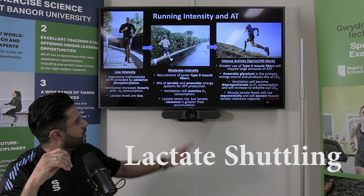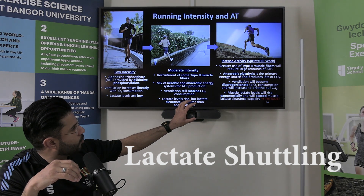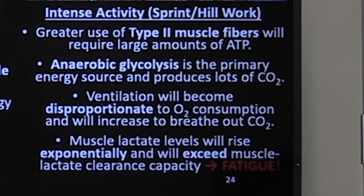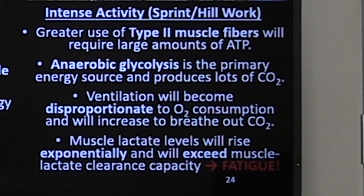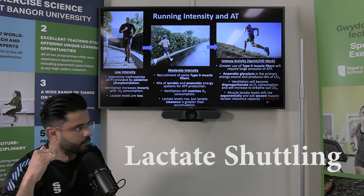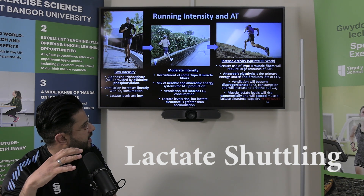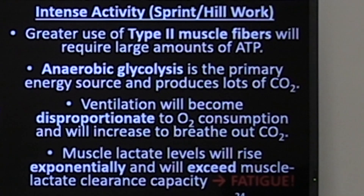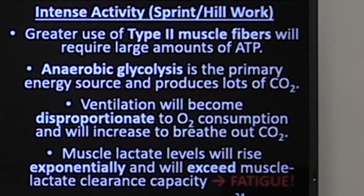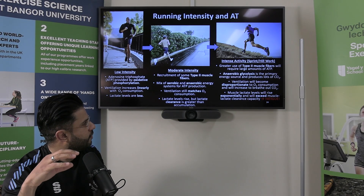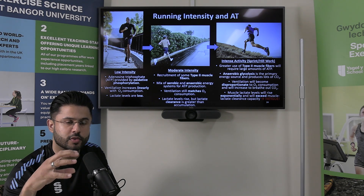When we move on to intense activity and start to crank up the intensity, we're going to use more type 2 muscle fibers requiring very significant amounts of ATP. By this point, you would have transitioned close to the threshold because anaerobic glycolysis will become your main energy source, producing lots of carbon dioxide. This is when hyperventilation starts to occur to try and breathe out the CO2, and ventilation becomes disproportionate to oxygen consumption — it increases further to blow off the excess CO2 being produced.